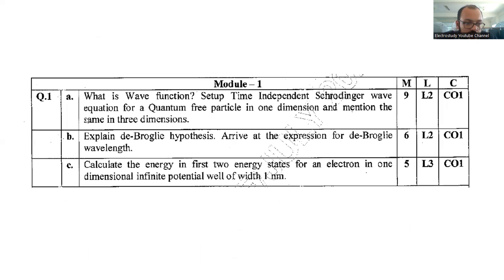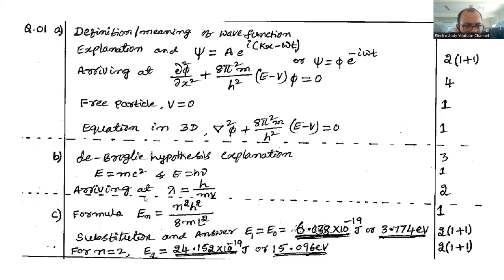Question number 1b: Explain the de Broglie hypothesis and derive the expression for de Broglie wavelength. Weightage is six marks. For de Broglie equation you are supposed to mention these conditions: E=mc² and E=hν where ν is your frequency. Arriving at λ=h/mv, you have to talk about the Planck constant and all those things. This is actually the de Broglie equation h/mv.